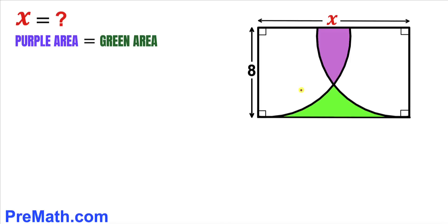Welcome to pre-math. In this video we have got these two overlapping quarter circles confined in the rectangle, such that this purple shaded area is equal to this green shaded area. We have been given the width of this rectangle as eight units, and now we are going to find the value of this length x.